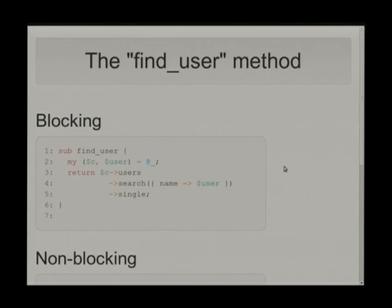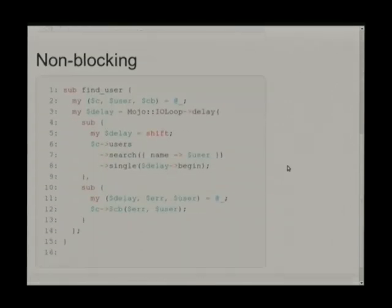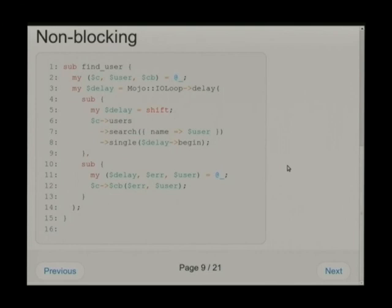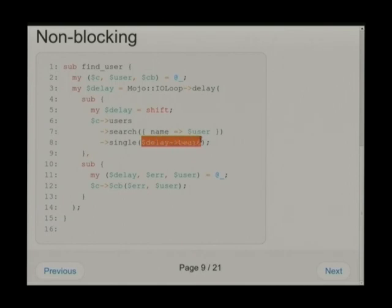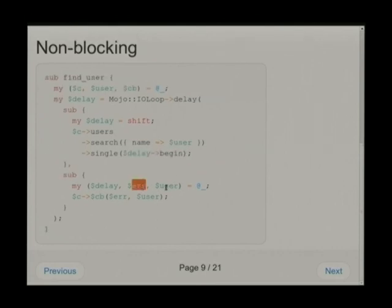So if this was our blocking find_user method, we might start with this as our non-blocking find_user method. We create a delay, call the same mechanisms until we get to the actual database read, and we pass it the delay begin — this returns a callback that will start the non-blocking action and keep track of it for us, and eventually pass forward the error if there was one, and the user object.